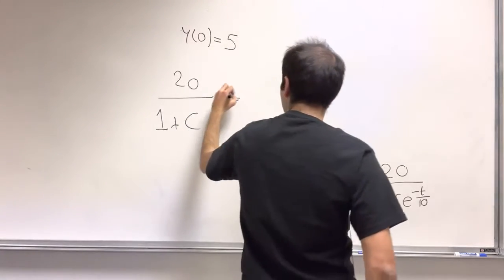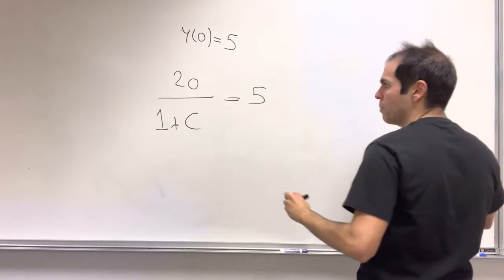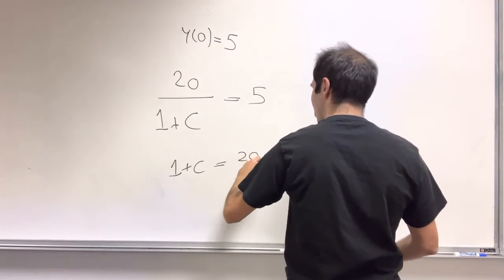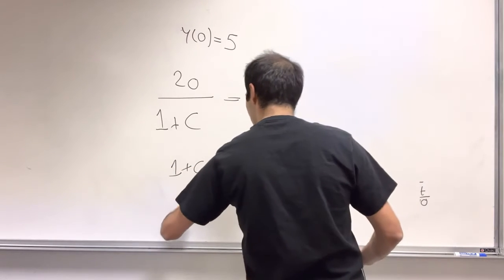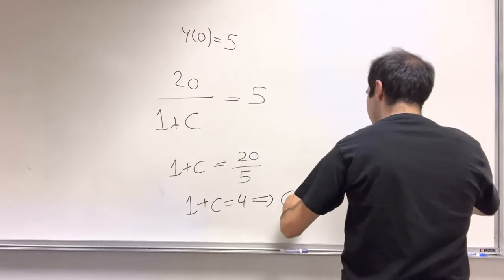All right, and then, you can cross-multiply. So 1 plus c equals 20 over 5. So 1 plus c equals 4. So c equals 3.